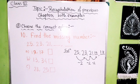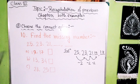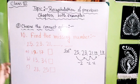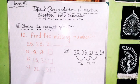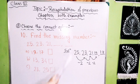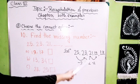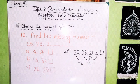Our last question: Find the missing numbers in the series 25, 23, 21, __, __. First check whether the series is ascending or descending. Since 23 is less than 25, the series is decreasing — we move backward two steps each time. So 21 minus 2 equals 19, and 19 minus 2 equals 17. Our answer is Option A: 19 and 17.